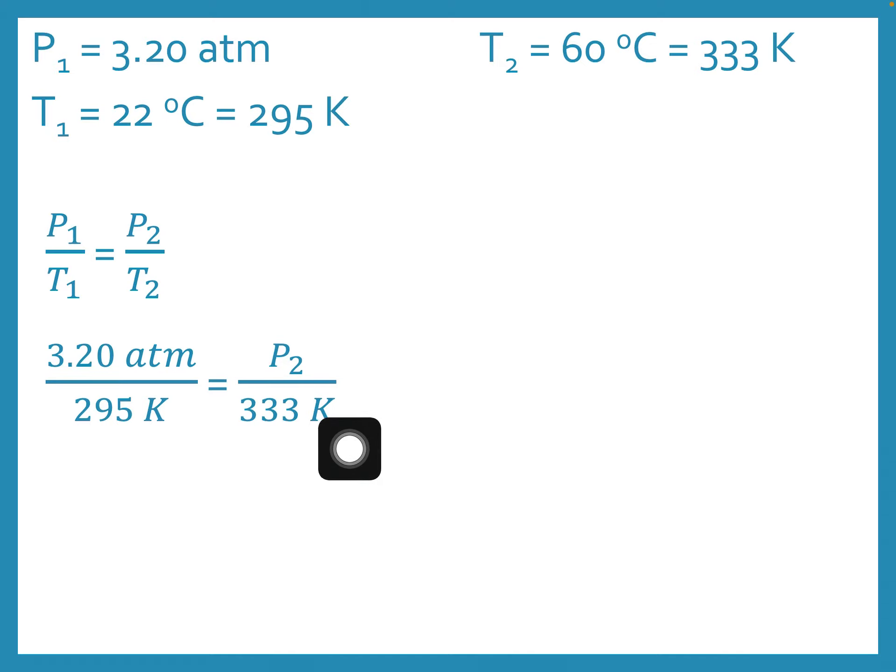So this is a division by 333 Kelvin, so I'm going to multiply by 333 Kelvin to isolate P2 to solve for that. And once again, cancelling units, that will leave me with a final answer in atmospheres. So that will give me 3.61 atmospheres for my final pressure.